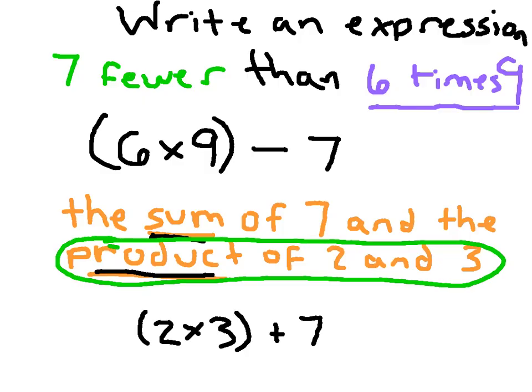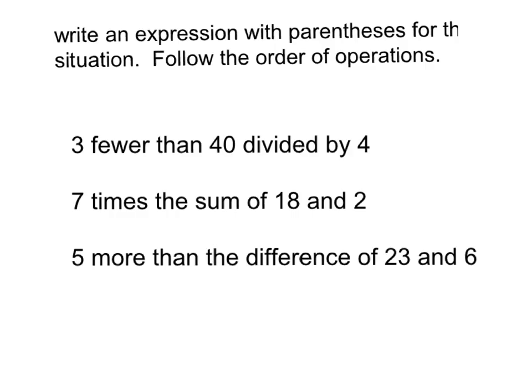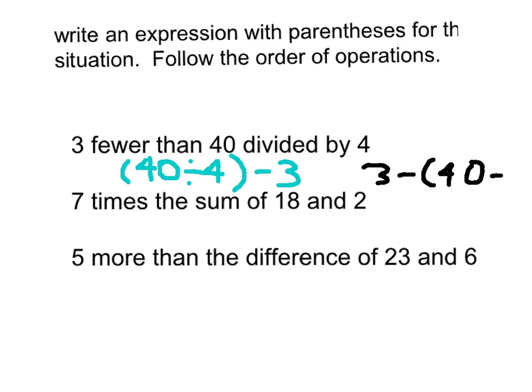Write an expression with parentheses for the situation. Take a moment to read the instructions. We've got 3 different situations — writing an expression with parentheses for each, following the order of operations. Pause the video and try. The first one is 3 fewer than 40 divided by 4. Some people might write 3 minus 40 divided by 4, but that would actually mean 40 divided by 4 fewer than 3. The correct expression is (40 ÷ 4) − 3, because it's 3 fewer than 40 divided by 4.